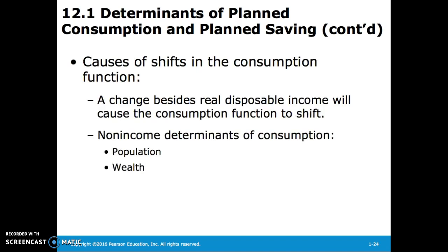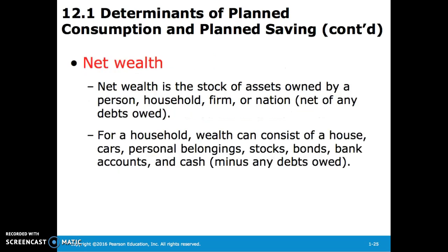A change besides real disposable income will cause the consumption function to shift. Non-income determinants of consumption include population and wealth. Net wealth is the stock of assets owned by a person, household, firm, or nation, net of any debts owed. For a household, wealth can consist of a house, cars, personal belongings, stocks, bonds, bank accounts, and cash, minus any debts owed like the value of your mortgage.